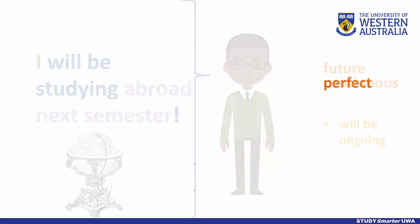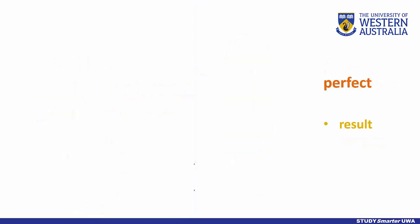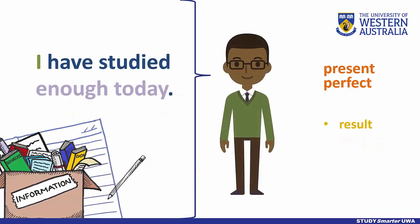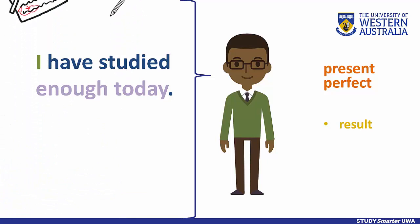The perfect aspect indicates that an action is complete or leading towards an outcome. It is made up of the verb 'to have' and the past participle of the main verb. In the case of regular verbs, this means the form that ends in -ed.